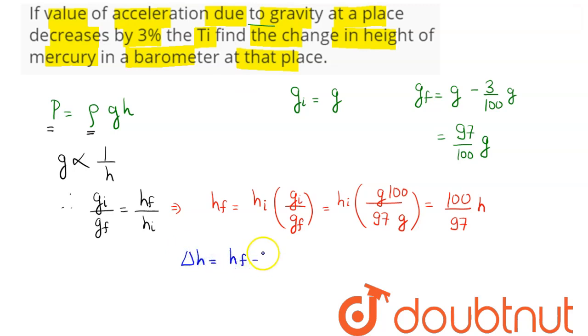Now we need the change in height of mercury in a barometer at that place, which is equal to Δh = h_f minus h_i, hence 100/97 h minus h.